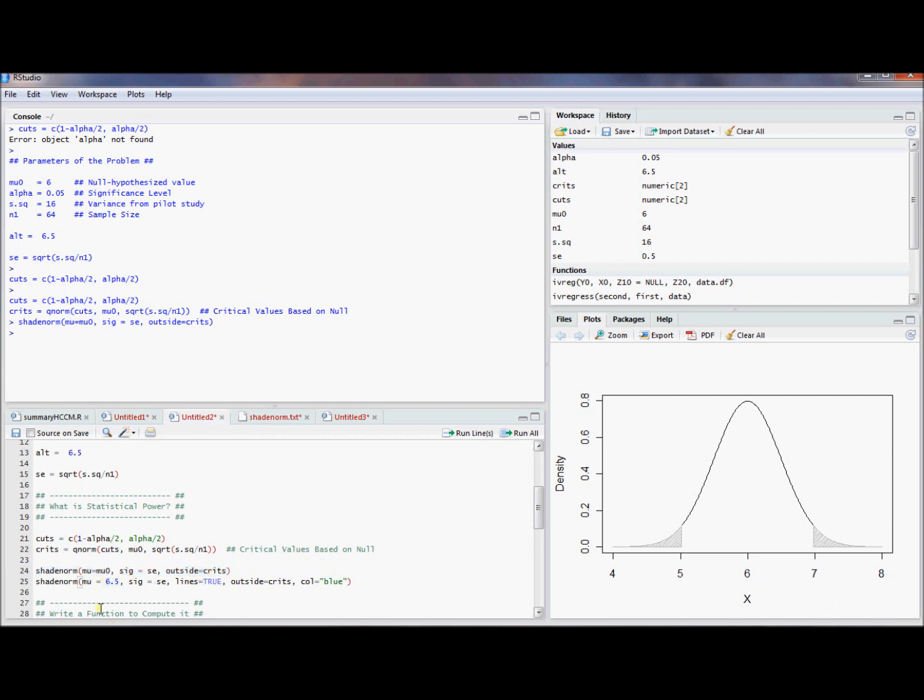So you might ask yourself, what if instead we said the mean was 6.5 in reality? It's not really 6. How frequently would we reject under the same variance of this estimate? So the way we can do this to actually plot this, use the shade norm command, and use the lines equal true to put this plot on top of the one that we already have.